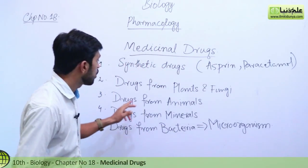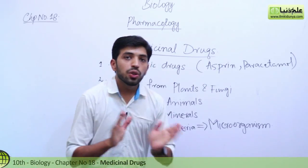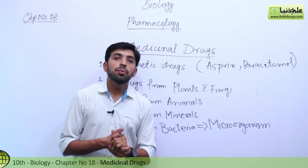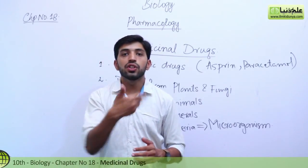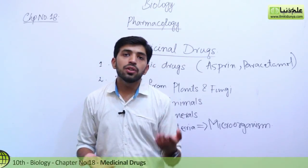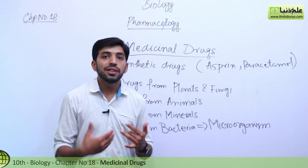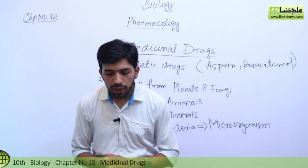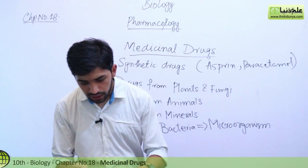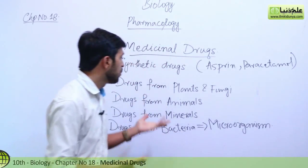Then we have drugs from animals. Drugs can be made from animals mainly through glandular secretions — the glands secrete many hormones, waxes, and other substances that can help us. For example, vitamins such as fish liver oil obtained from animals can also help us.